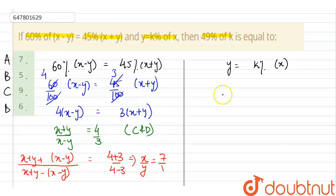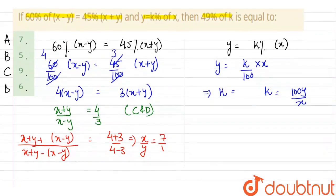Now, similarly, the second equation, that is y equals to k percent of x, let's solve this. So, y is equals to k by 100 into x. So, from this we can find the value of k. So, k will be 100 y upon x.